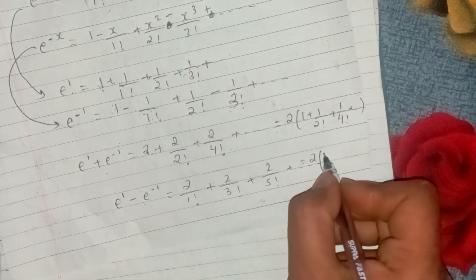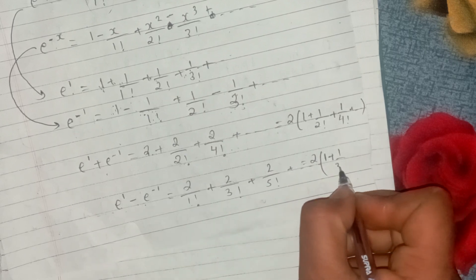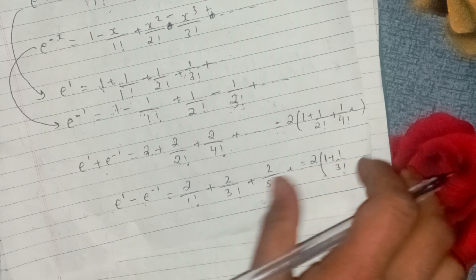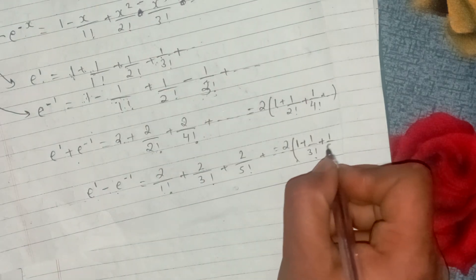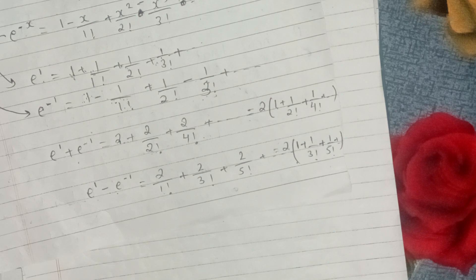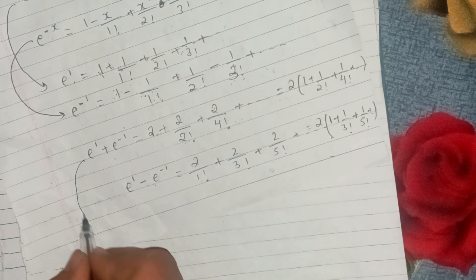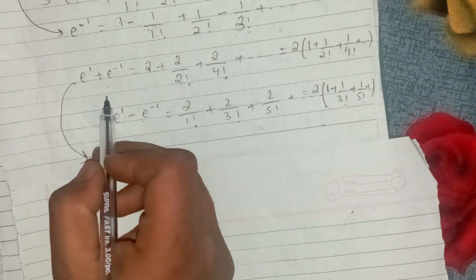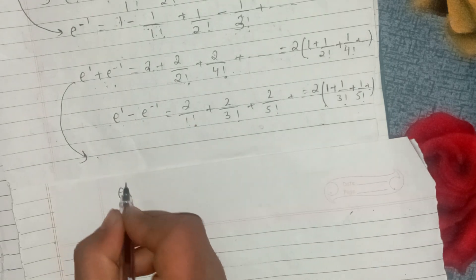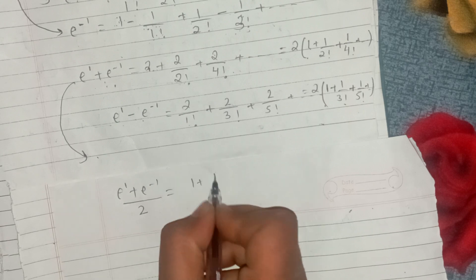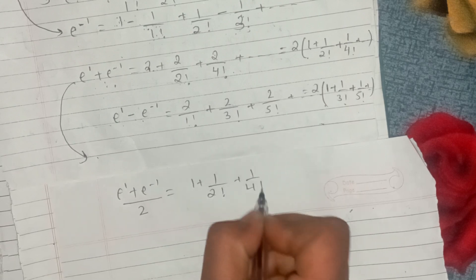We get 1 by 3 factorial. You can see 1 factorial in the question. So 1 by 3 factorial plus 1 by 5 factorial — common factor is 2. And we get: 1 plus 1 plus 1 plus 1 minus 1, which is 2. So 2 equals 1 plus 1 by 2 factorial plus 1 by 4 factorial plus dot dot dot.